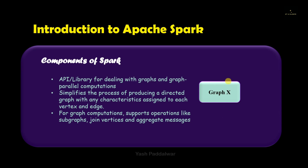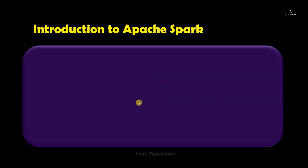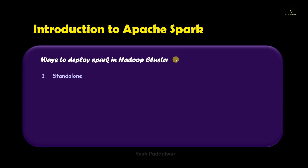So now you have an overview of all the components present inside Spark. If you have any doubts regarding these components, comment them down. Now let's look at the ways to deploy Spark in a Hadoop cluster — there are three ways: standalone, Spark over YARN, and Spark in MapReduce, commonly called SIMR.